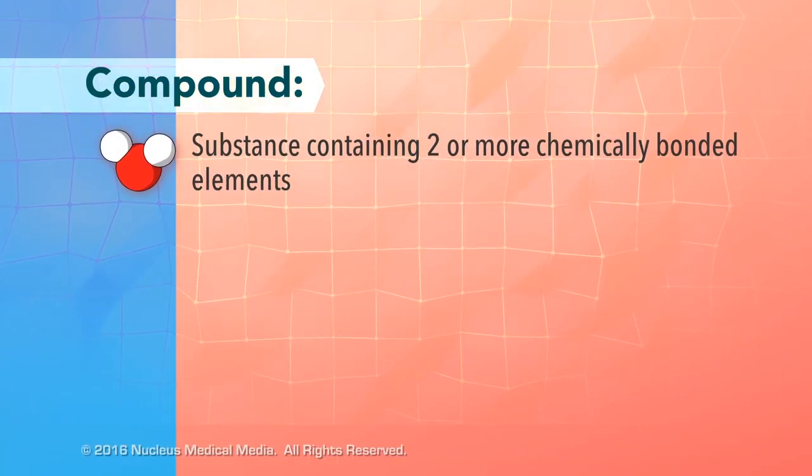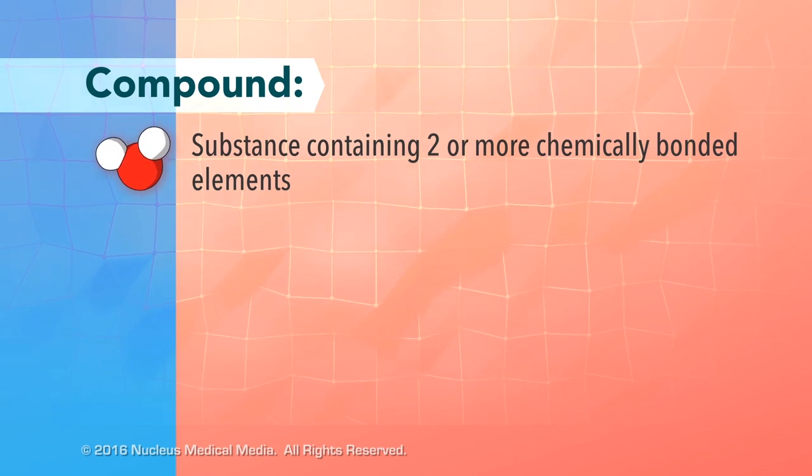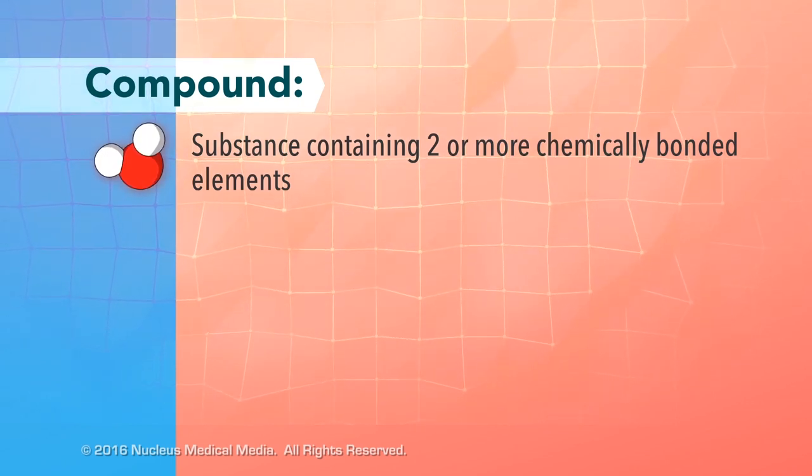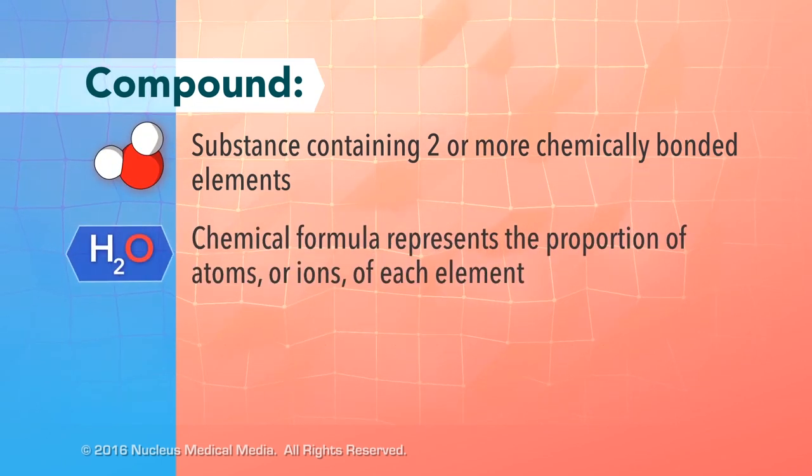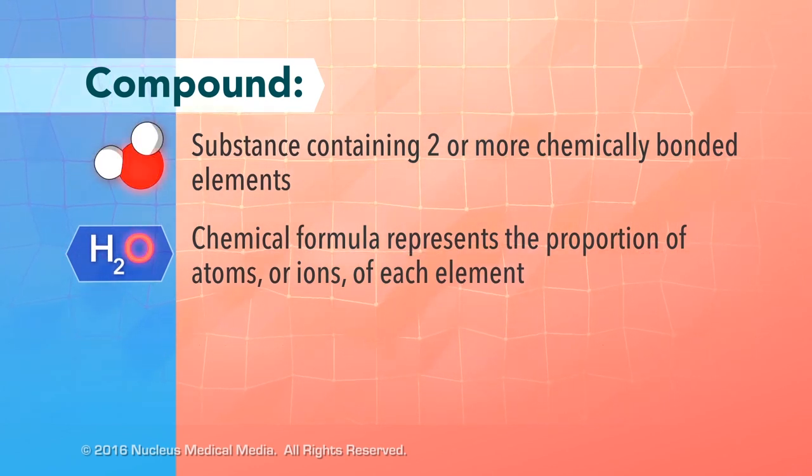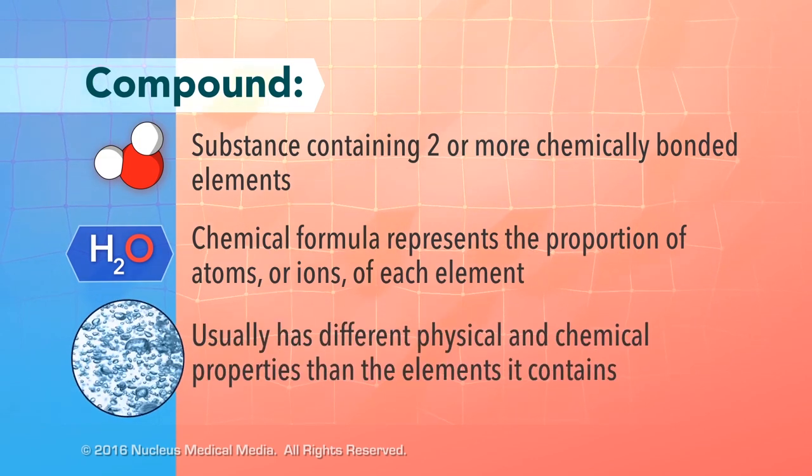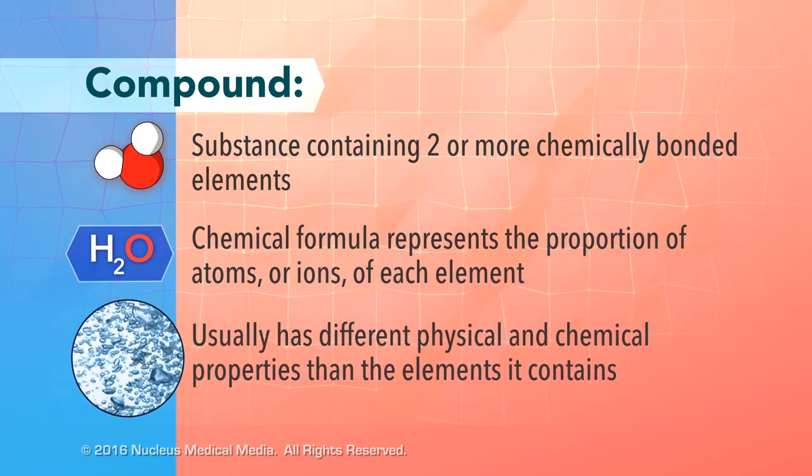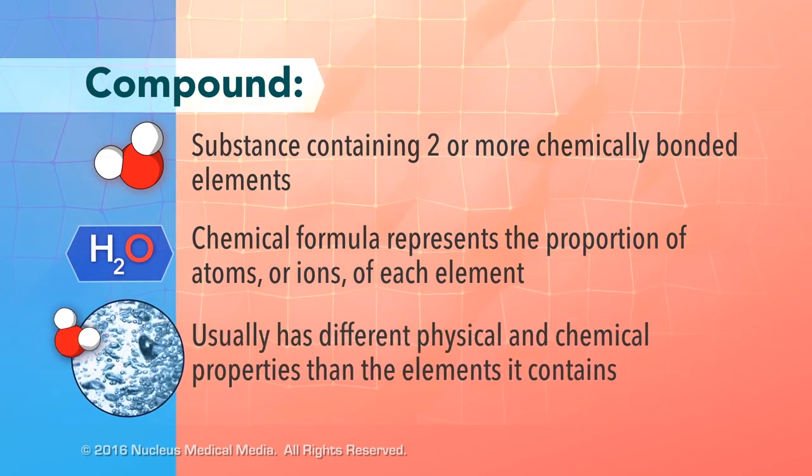In review, a compound is a substance containing the chemically bonded atoms of two or more elements. A chemical formula gives the proportional number of atoms or ions of each element in a compound. And a compound usually has different physical and chemical properties than the elements it contains.